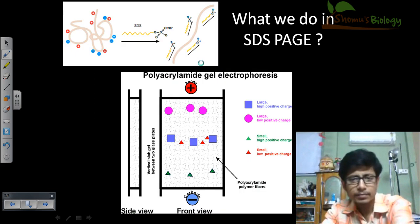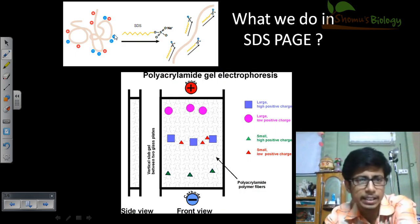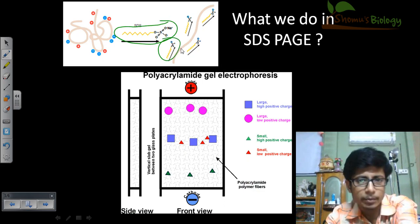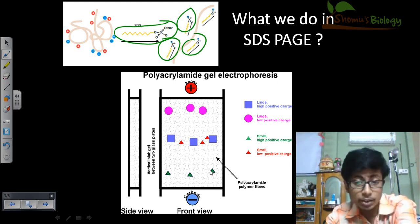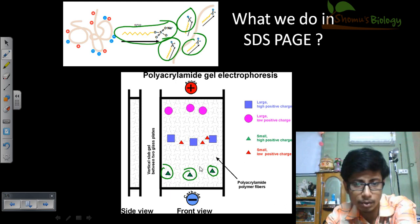Remember, in case of SDS PAGE, we break the proteins down and add SDS so that we get linearized segments of those proteins, then load them in polyacrylamide gel where they are separated based on their molecular weight. The smaller will travel the farthest, and the larger will not travel as far.